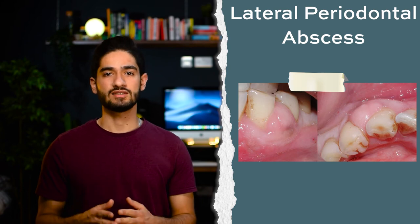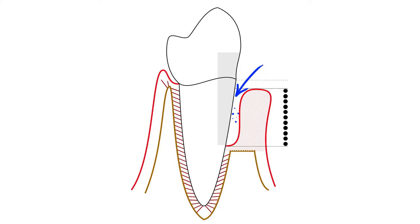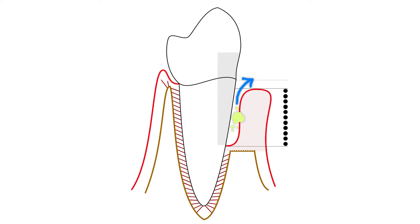A periodontal abscess is actually caused by the bacteria inside of a deep periodontal pocket. A pus-filled abscess may form when the immune system responds to the bacteria and attempts to isolate the infection from spreading. Usually the pus will drain naturally through the pocket, but if there's something blocking the drainage like calculus or trapped food, then the abscess can grow.